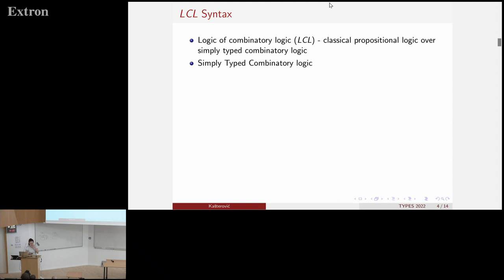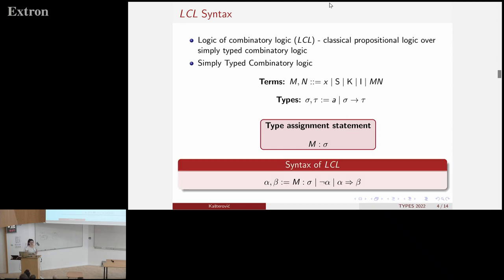So we consider simply typed combinatory logic. So we have a set of terms, we have a set of simple types and what we focus on is the set of statements of the form M has type sigma. But we do not take all statements of this form where M can be any term and sigma can be any type, we just take statements that can be typed in some context.